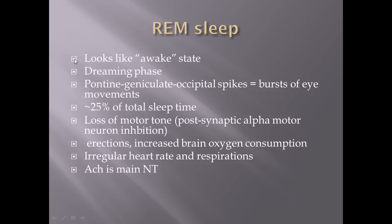REM sleep actually looks like the awake state on EEG brainwave monitoring — you're going to appear to be in an awake state, but you're actually in a dreaming state. This is where you can remember those awesome or terrible dreams. The eye movements, as the name suggests, are a burst of rapid eye movement — almost like a nystagmus. This is due to the pontine geniculate occipital spikes, areas within the brain that contribute to the eye movements.